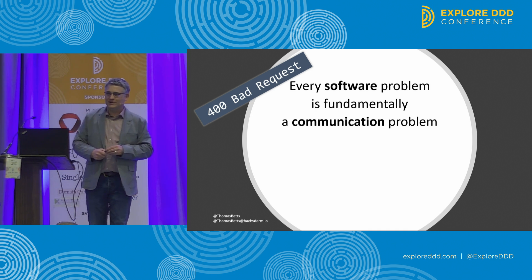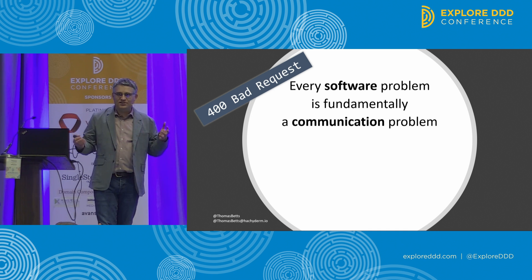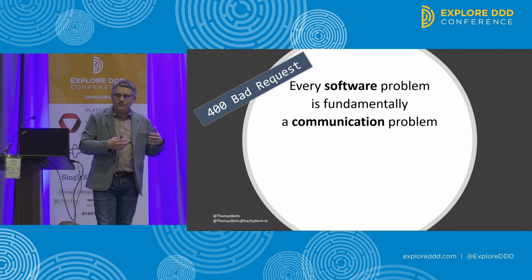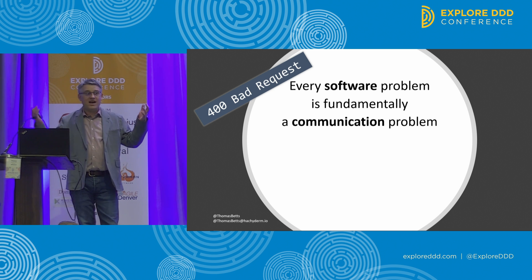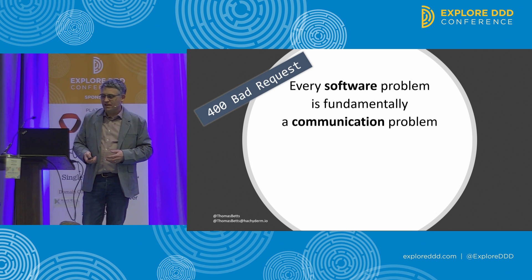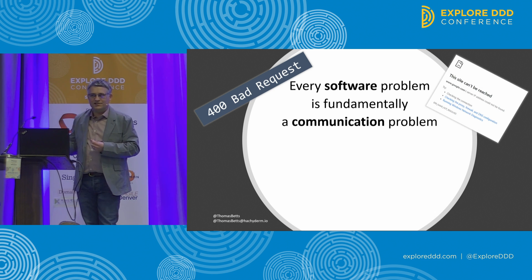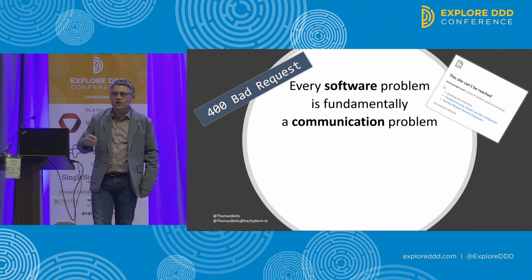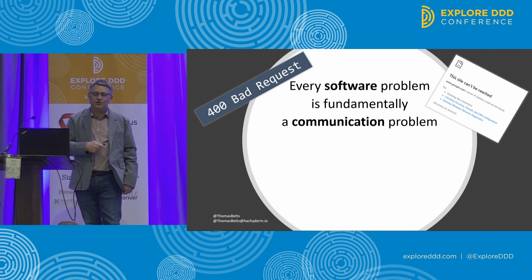Maybe some examples will help. Who's ever seen a 400 Bad Request come back? This is in the HTTP spec, which specifies how we communicate between servers. It's the first of the client errors — the server saying, 'I don't know what you meant,' and throwing that back to the client. What about DNS? Every problem is a DNS problem, but what is DNS? It's just a way to help us communicate — help me find who I'm trying to talk to. So when DNS is broken, it's still a communication problem.